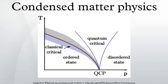Condensed matter physics is a branch of physics that deals with the physical properties of condensed phases of matter. Condensed matter physicists seek to understand the behavior of these phases by using physical laws.